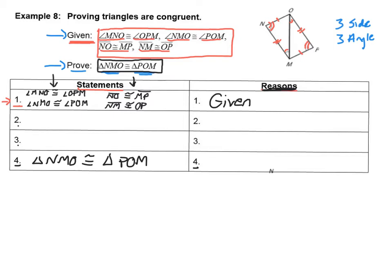We have some idea as to where to get started. I need to say something about the third sides in these two triangles first. The only sides that aren't marked are these sides down the middle, which the two triangles actually share. So my goal is to show that OM is congruent to OM. The reason they would be congruent is obviously that they're shared by both triangles — that reason is the reflexive property of congruence.